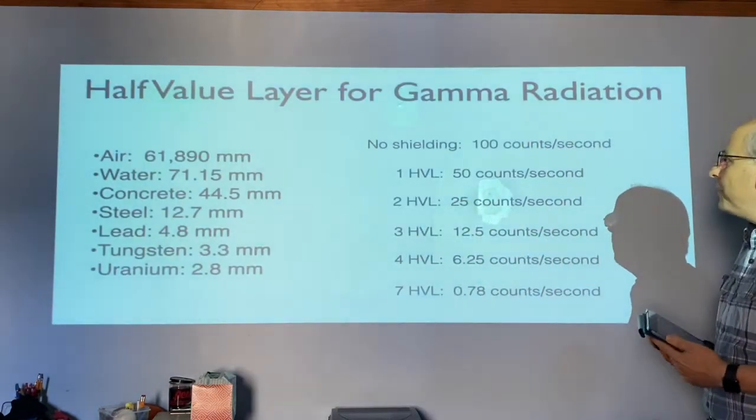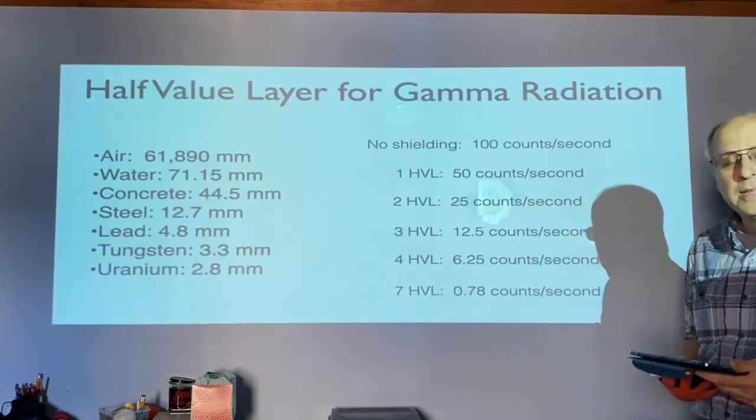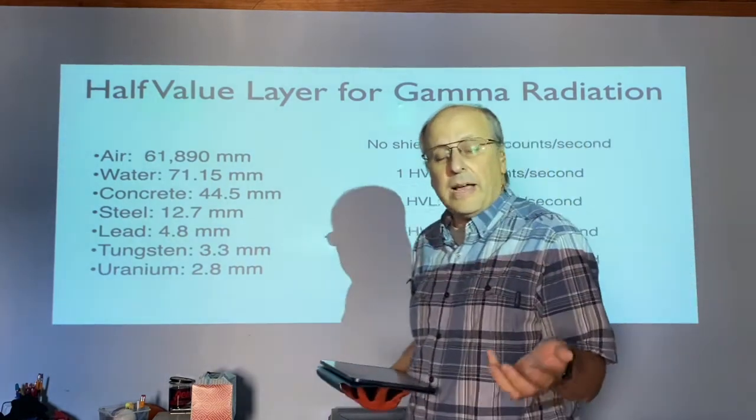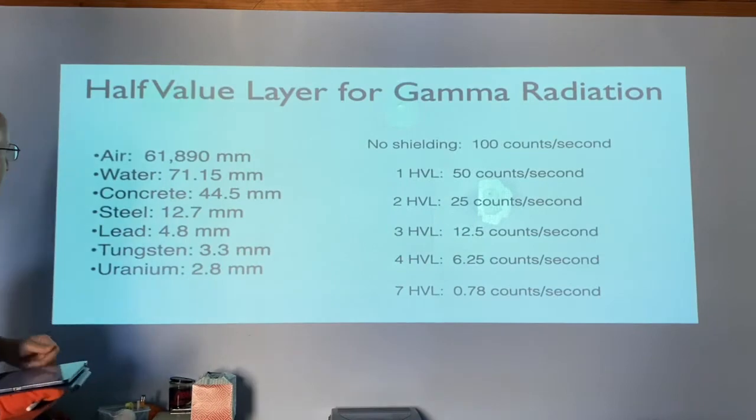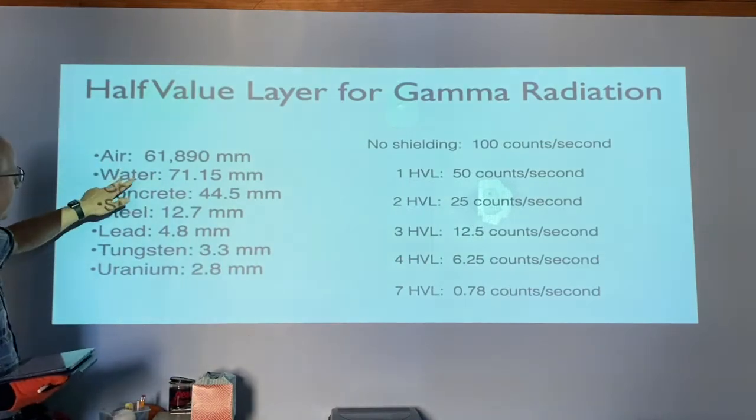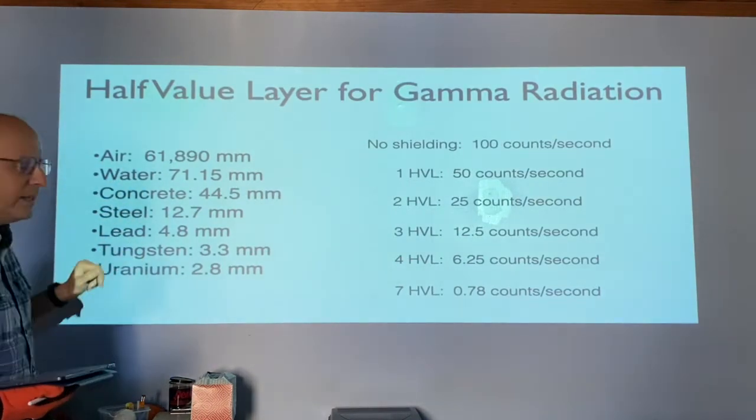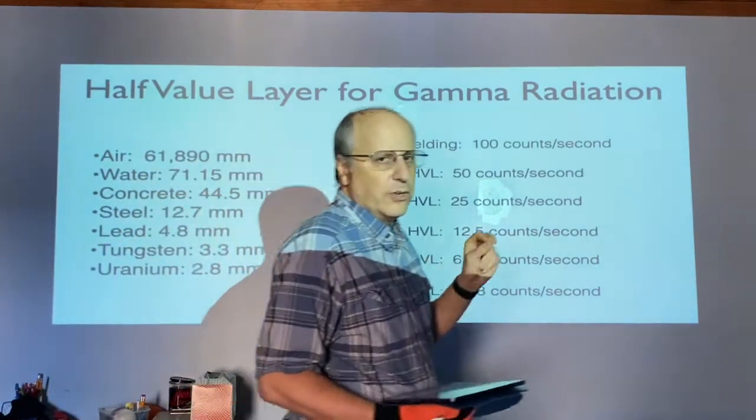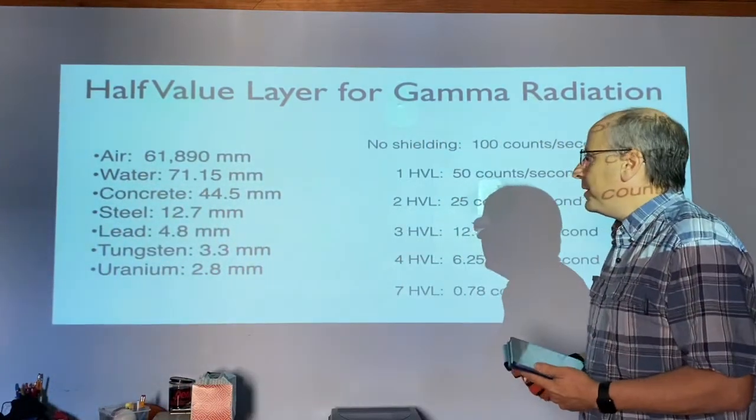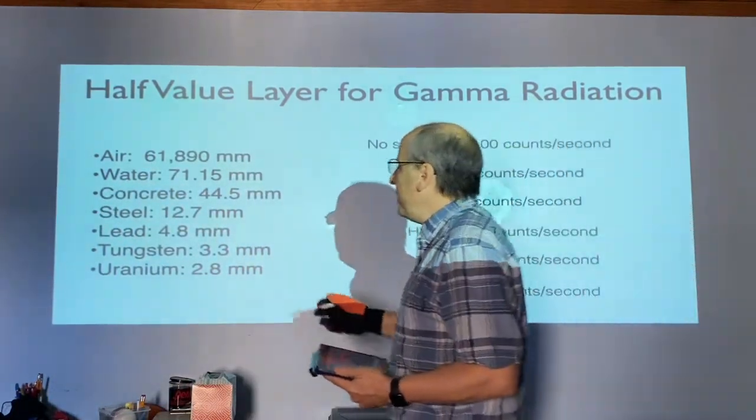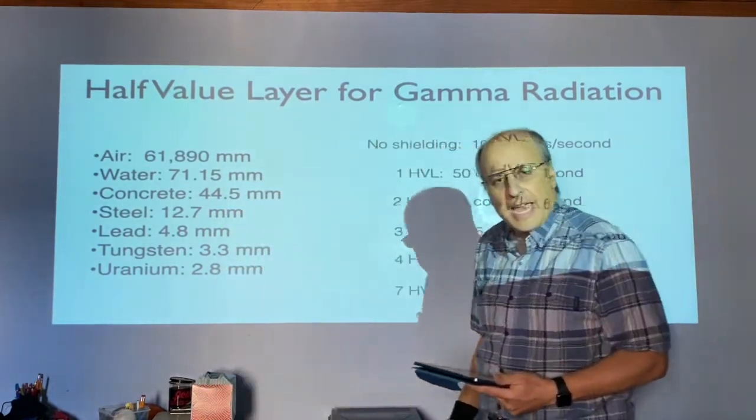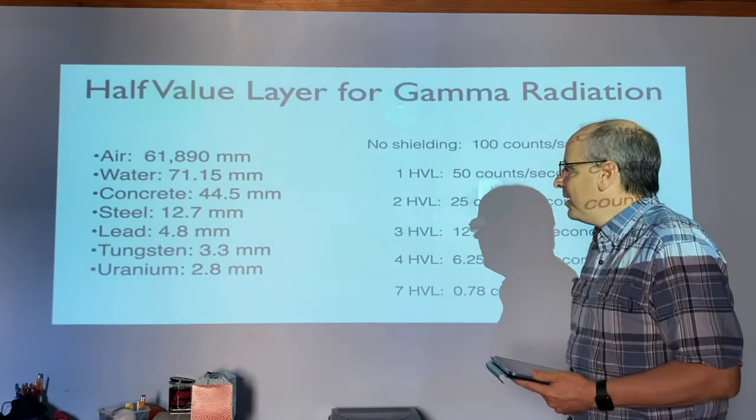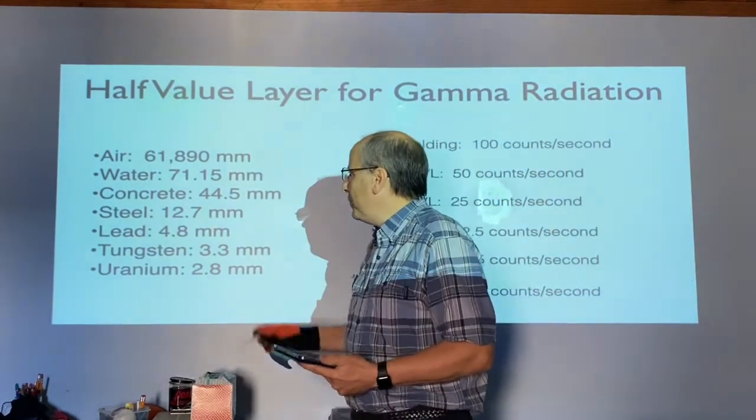So for gamma radiation, and again, we talked about how it's different for each type. Gamma being the hardest to stop, this is how thick you need different materials to stop half of the original gamma. For instance, with air, you would need about 62 meters of air to block half of the gamma. Water you'd need about 71 millimeters.